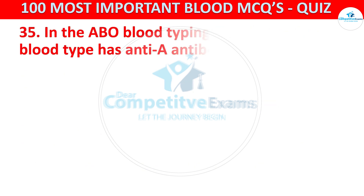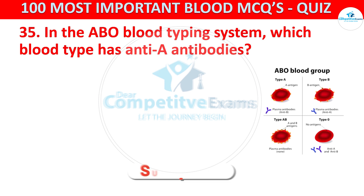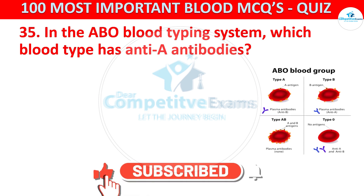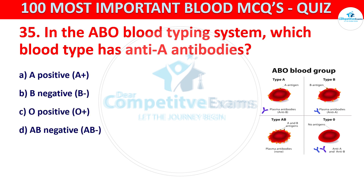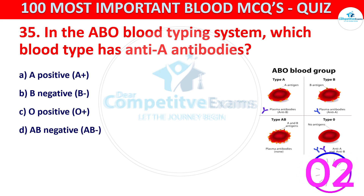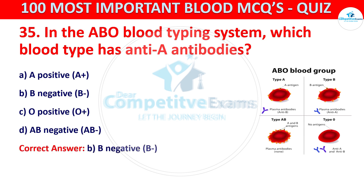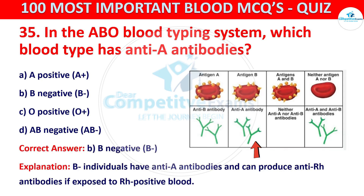Question number 35. In the ABO blood typing system, which blood type has anti-A antibodies? Your options are A positive, B negative, O positive, or AB negative. The correct answer is B, that is B negative. B individuals have anti-A antibodies and can produce anti-RH antibodies if exposed to RH positive blood.